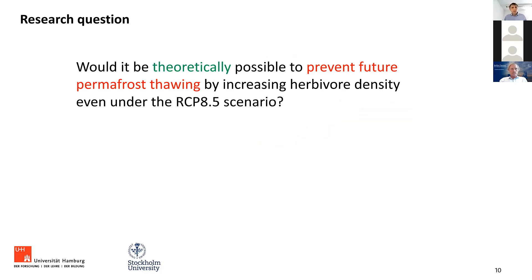The research question of the paper is: would it be theoretically possible to prevent future permafrost thawing by increasing herbivore density in these permafrost regions, even under the strongest warming scenarios — even under the RCP 8.5 scenario? That's also why we take the RCP 8.5 scenario — because we want to really go to the limit and see if, even under the strongest warming, it would be possible. To do this, we apply a land surface model: the JS Bach model — the Jena Scheme for Biosphere Atmosphere Coupling in Hamburg — as published by Reick et al. 2014 and Porada et al. 2016.